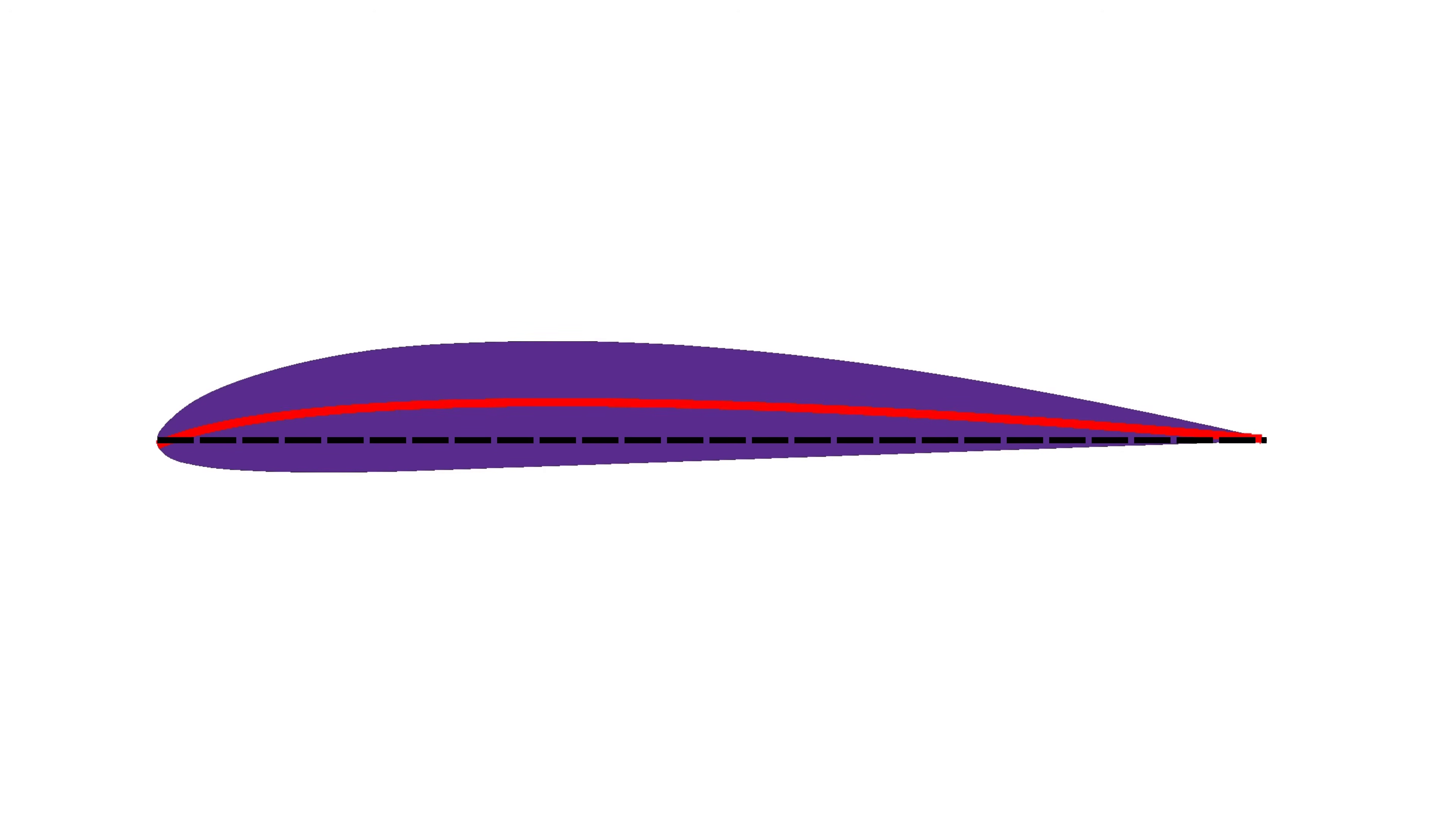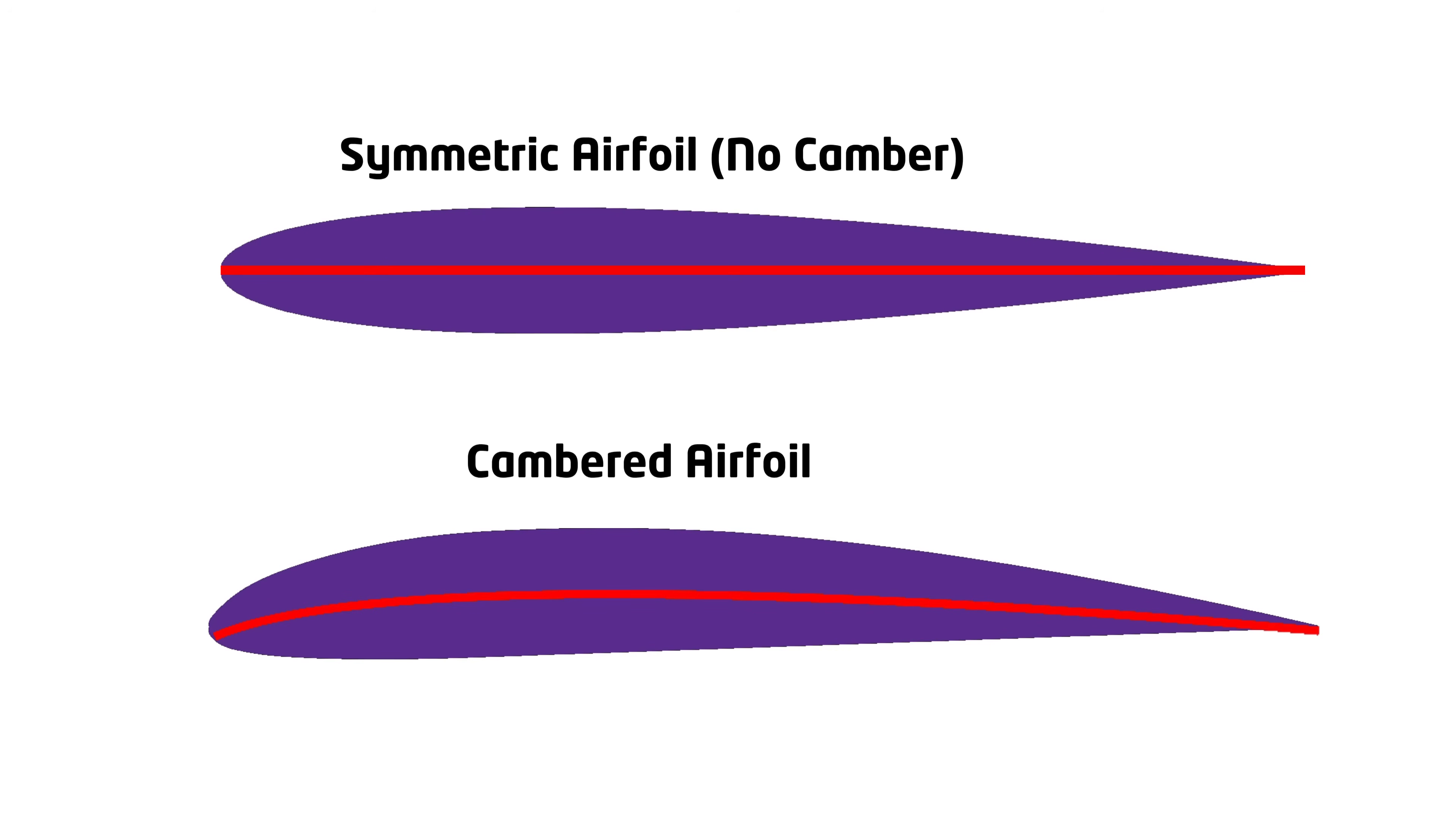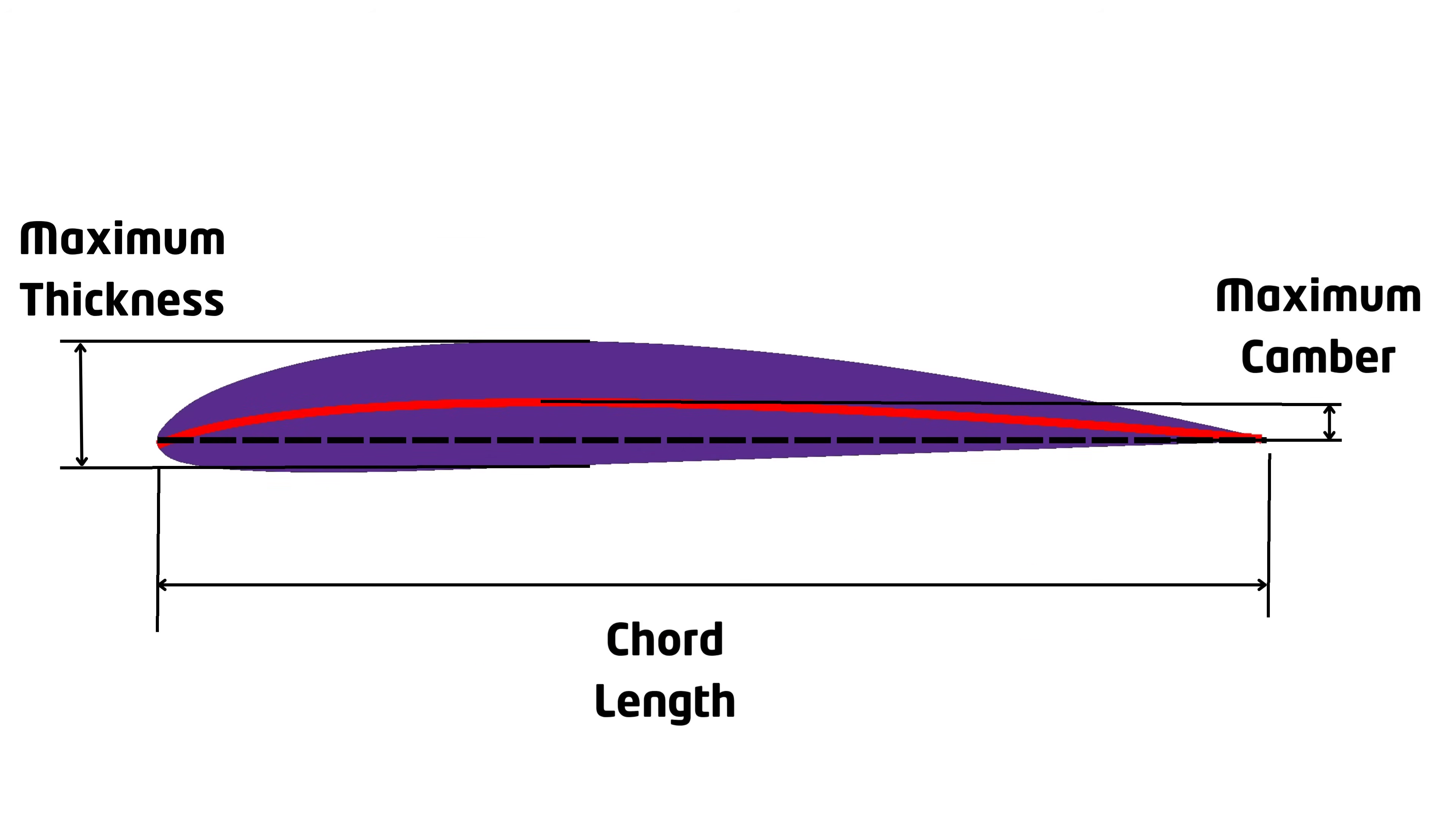There are three main metrics used to describe the geometry of an airfoil. The chord length is the total length of the chord line. It measures the size of the airfoil. The maximum camber is the maximum distance between the chord and camber lines. It is a measure of how curved the airfoil is. Note that some airfoils are symmetric and have zero camber, while others are curved. As we will see, camber is used to increase the lift capabilities of the airfoil. Finally, the maximum thickness is the maximum distance between the upper and lower surfaces.